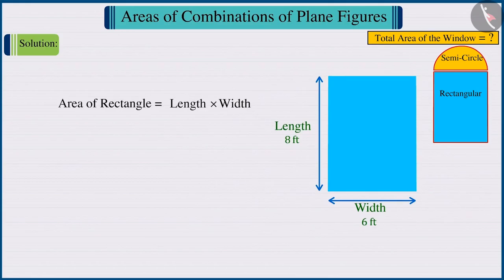So, substituting the value of the length and the width in the formula for the area of a rectangle, on solving, the area of the rectangular portion is obtained as 48 square feet.